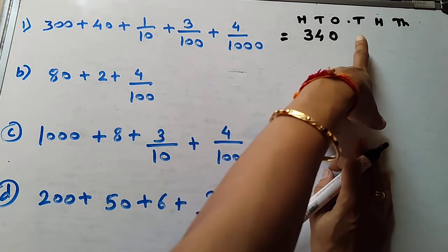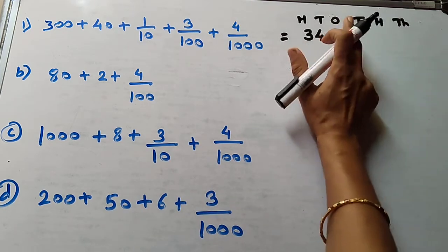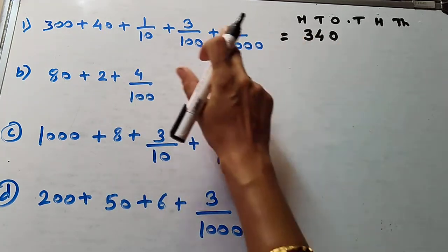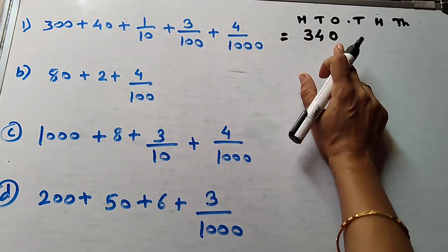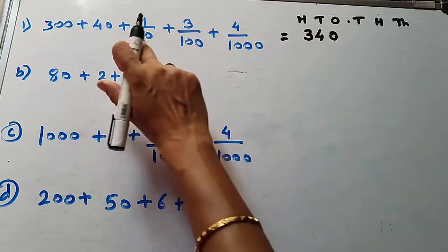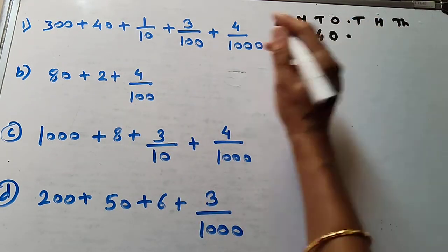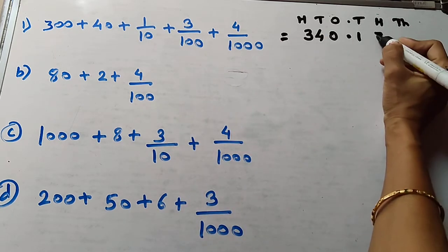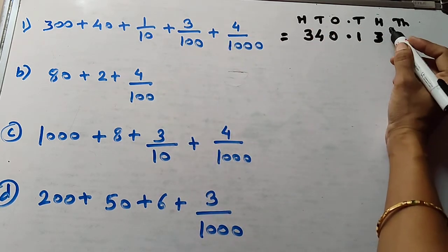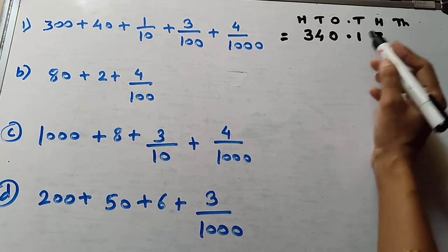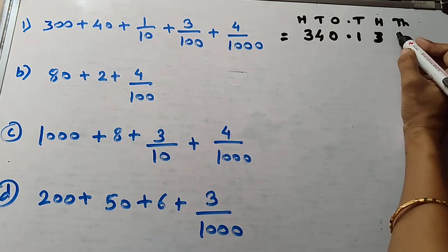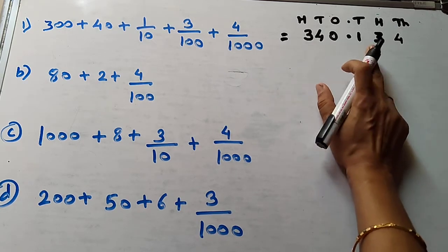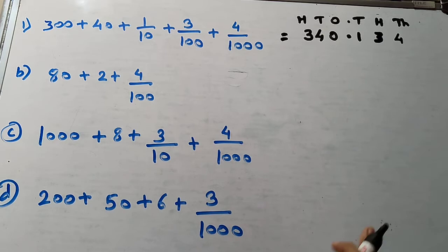This is for your information only; don't write it in the exam paper. Write: 300, 4 tens, no ones place so write 0. Decimal point. Tenths place is 1, hundredths place is 3, thousandths place is 4. So we get the number 340.134. This is your answer.